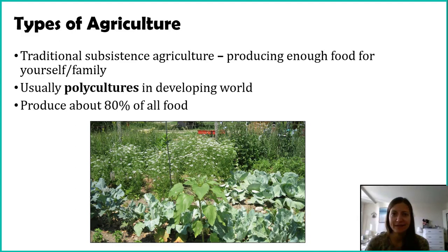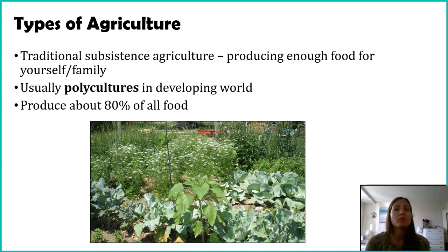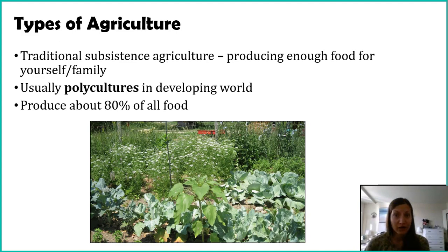Think about China and India — some of the countries with the largest world populations. In rural areas, a lot of people are farmers providing food for themselves and selling to the local community — all of that is considered subsistence agriculture. It produces a lot of the food and accounts for a lot of the farms, even though the actual land used is quite minimal. Another reason for that is that a lot of our industrialized agriculture is being used for livestock, not necessarily producing food for humans but producing feed for chickens and cows.